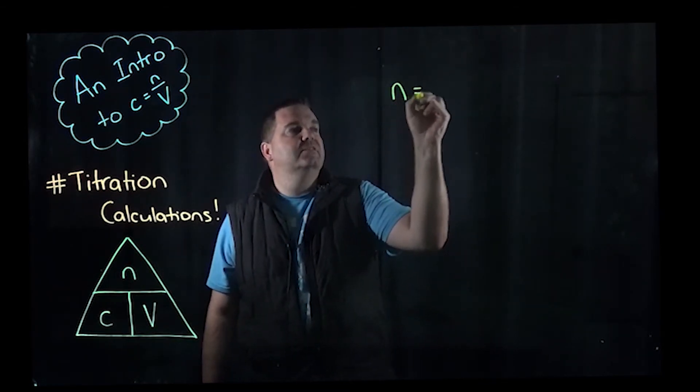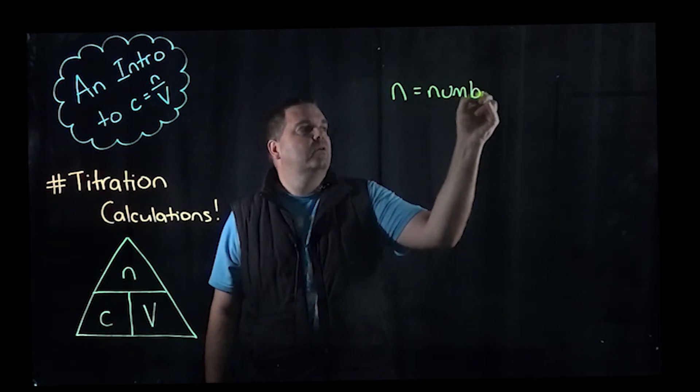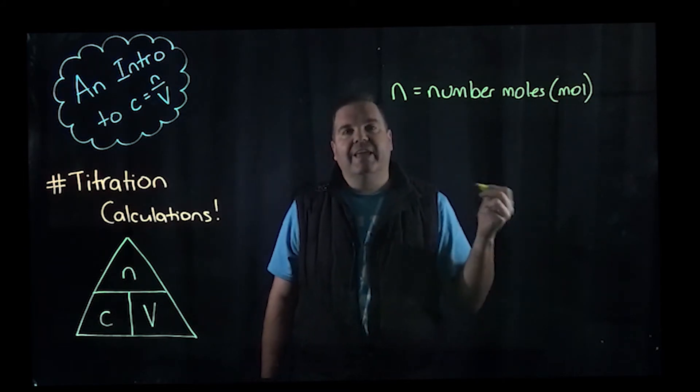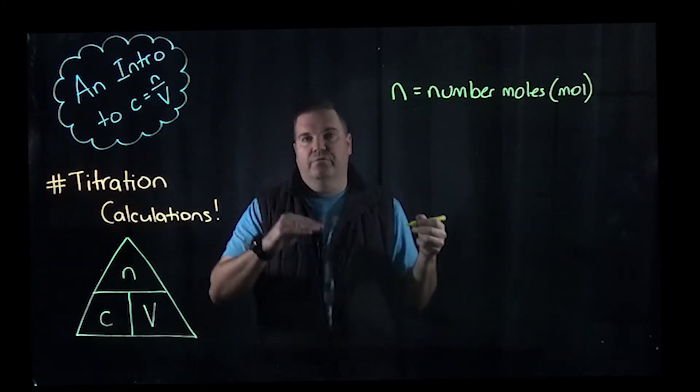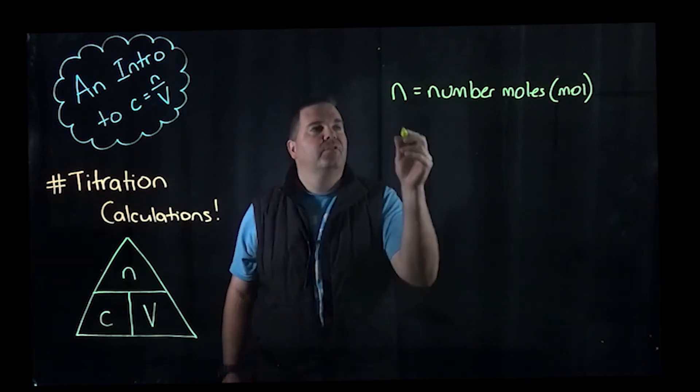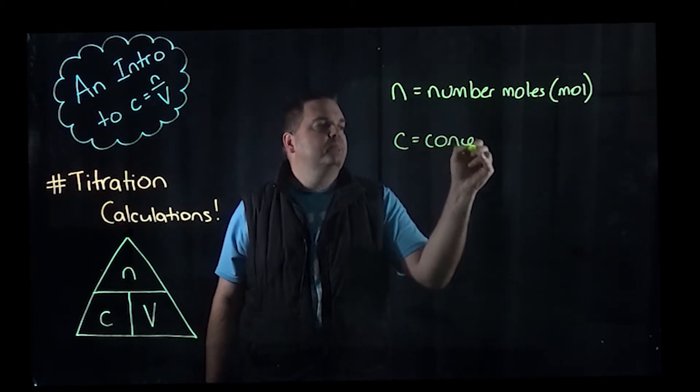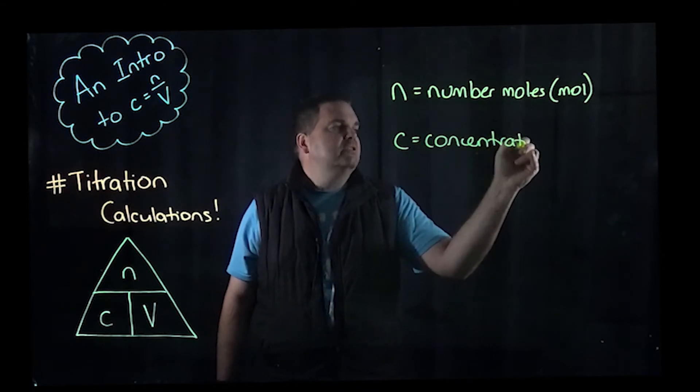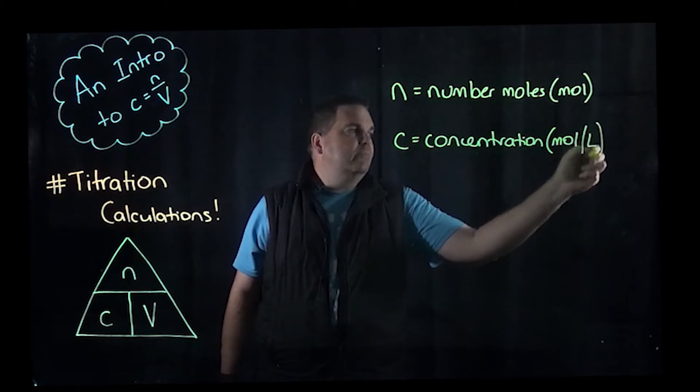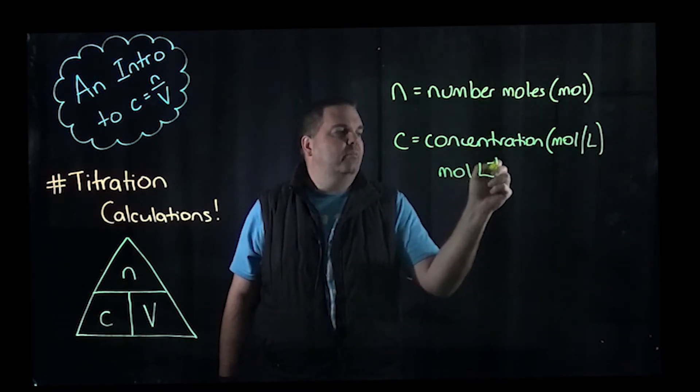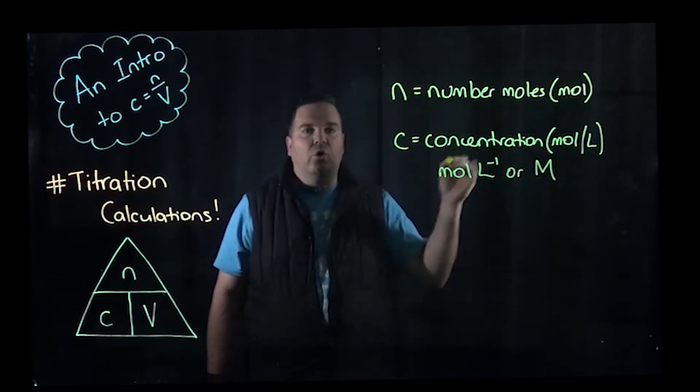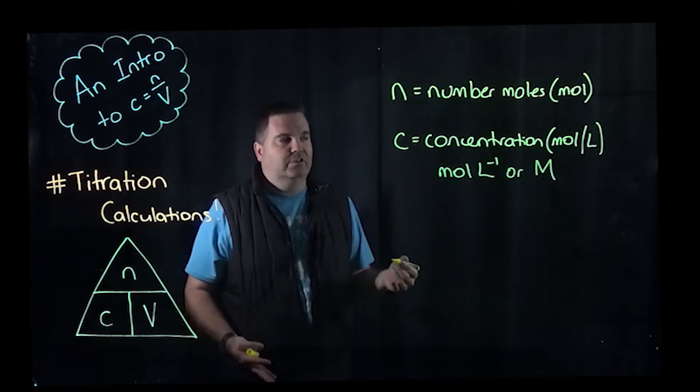N is number of moles and they have the units mol. You can calculate number of moles using that mass over molar mass like we looked at initially with stoichiometry calculations. C is concentration and the units for that are moles per litre. Sometimes you'll see it written as mol L^-1, or you might just see it written as big M. All three of those are the same thing, just written different ways.